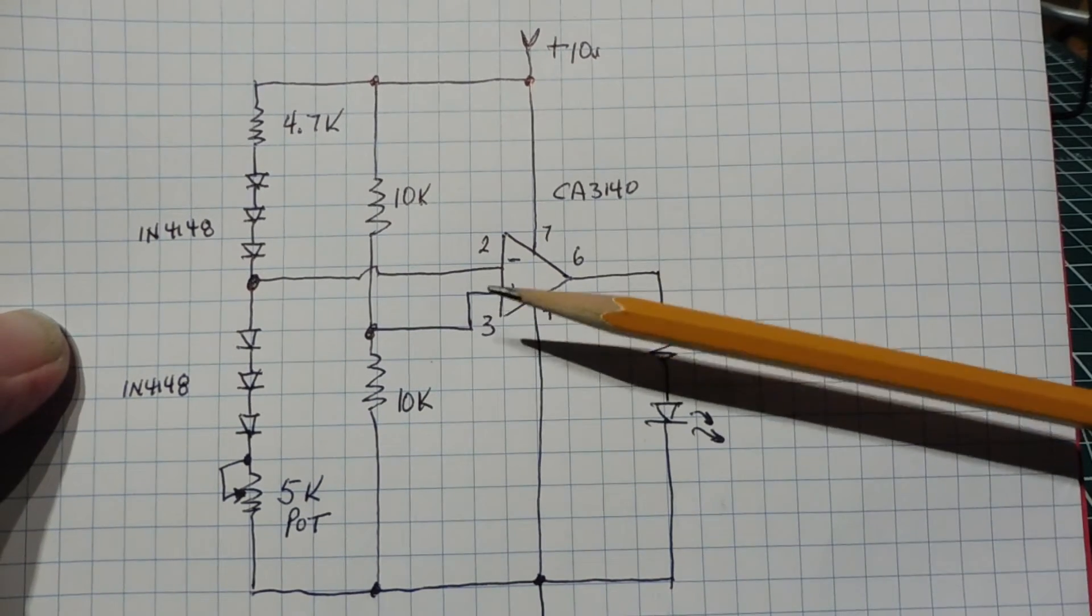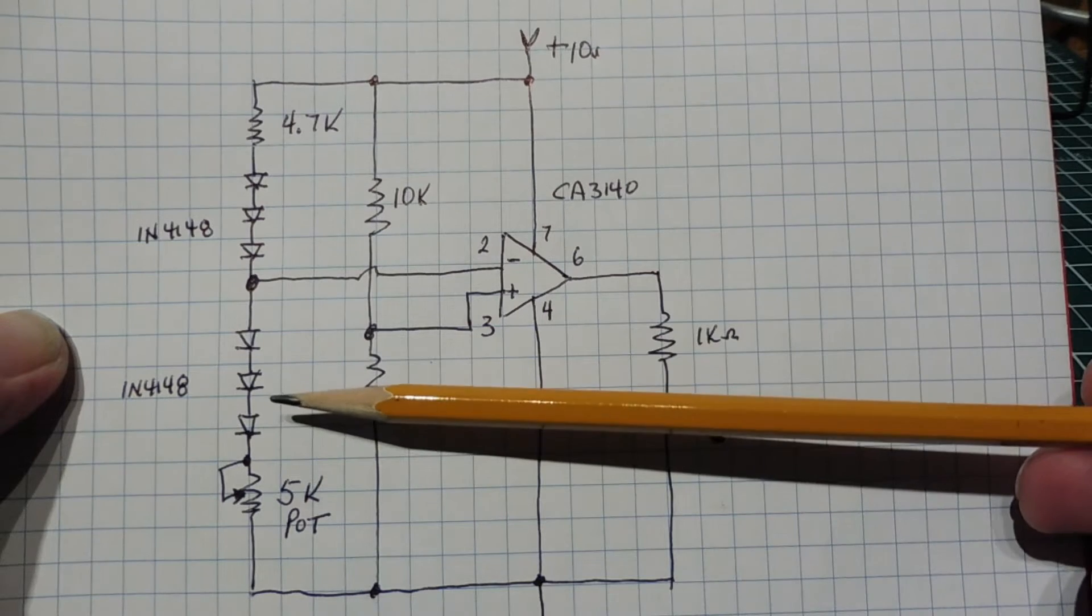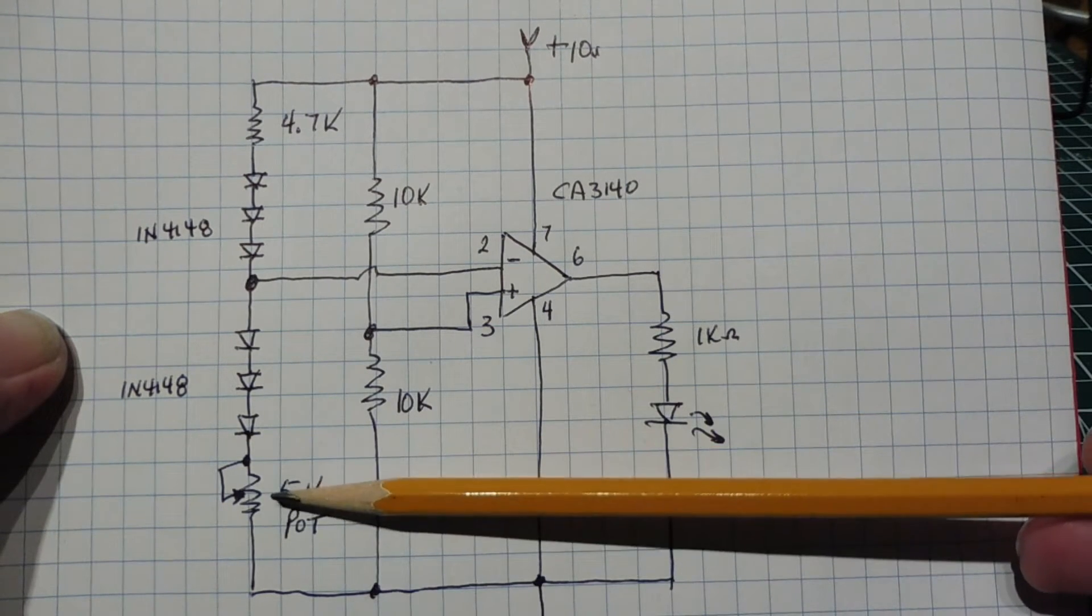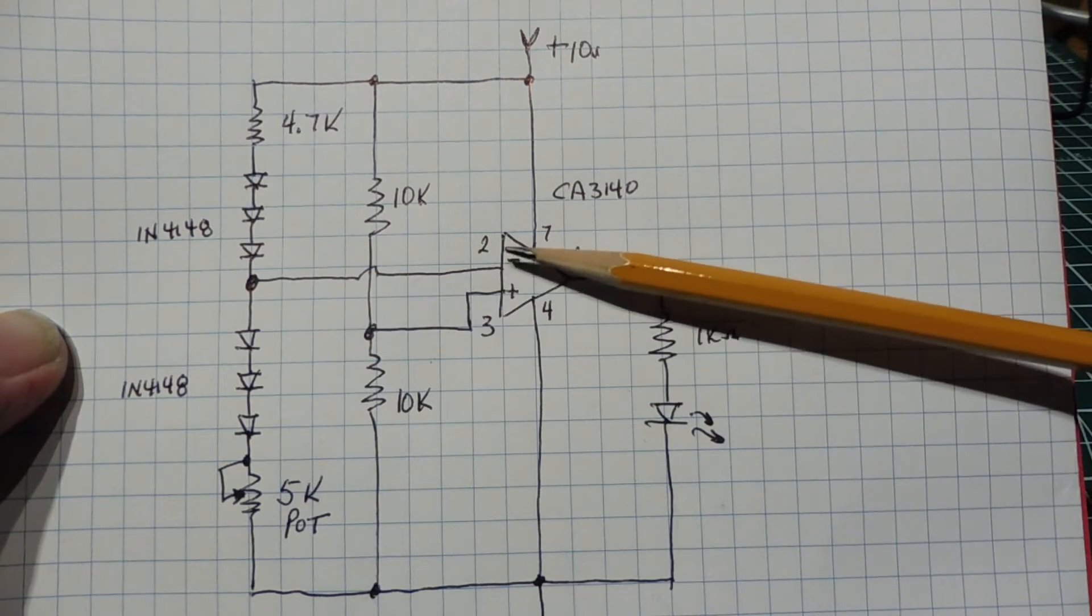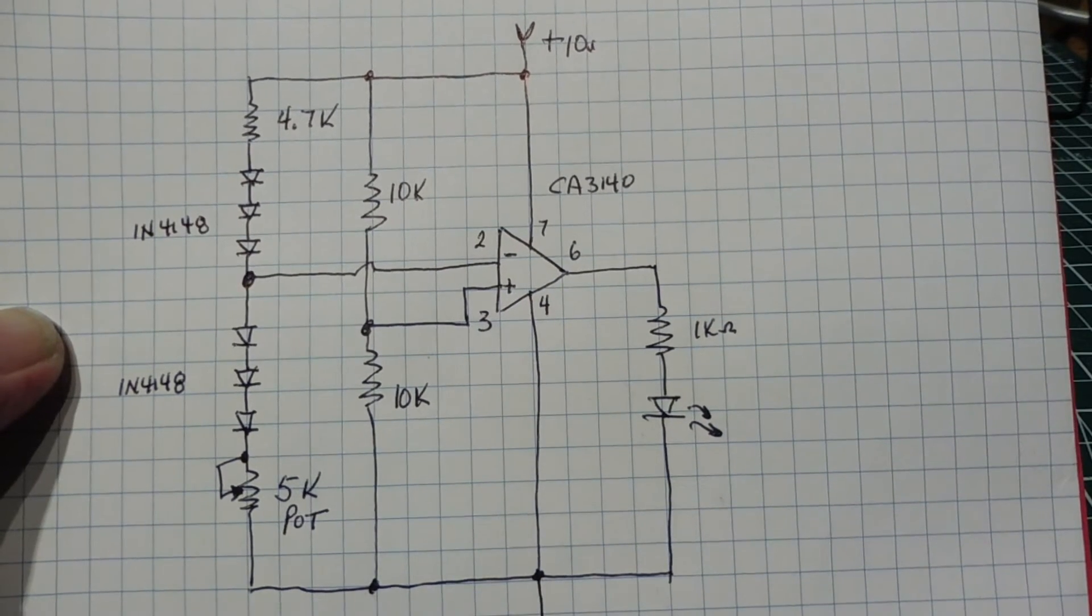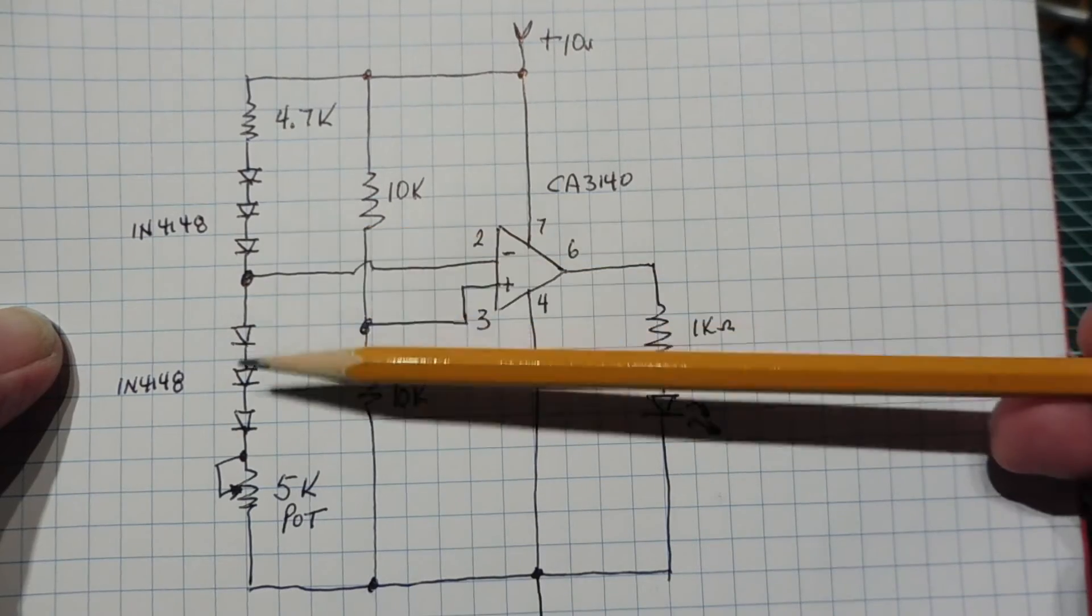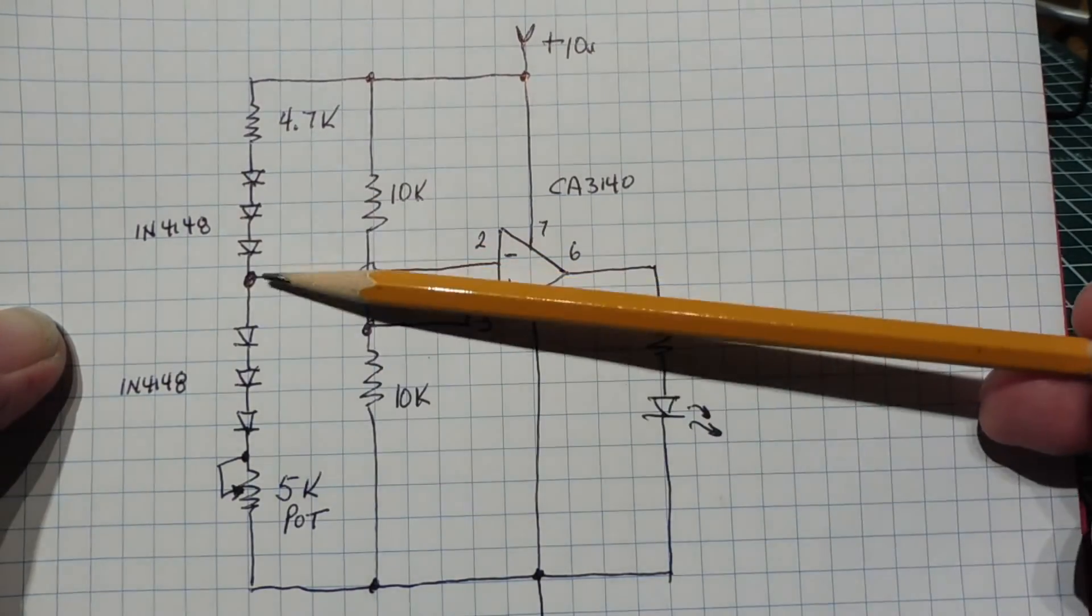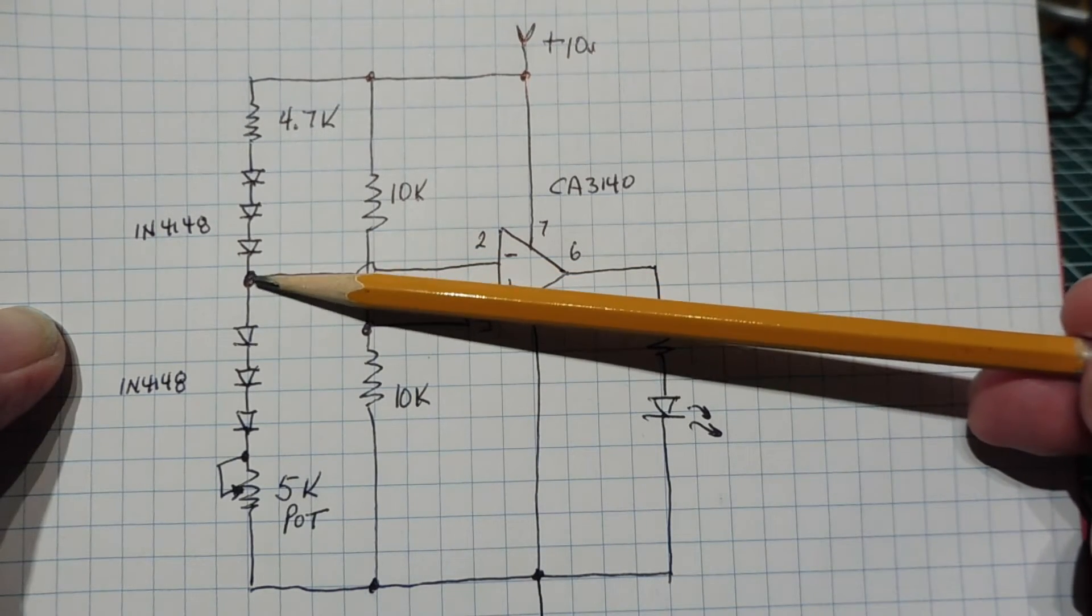We also have another voltage divider consisting of a 4.7k ohm resistor and three diodes, then three diodes and a 5k pot. If we adjust the pot to 4.7k ohms, we have another voltage divider which splits the VCC in half and feeds into pin two. As the ambient temperature of the room increases or decreases, the voltage drops across the three diodes on each leg will also increase or decrease by the same amount. So no matter what the ambient temperature is, this point will always be constant.